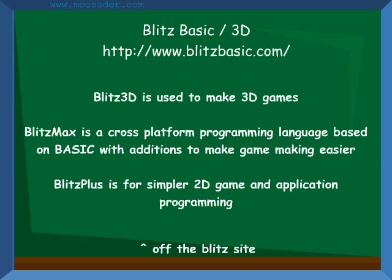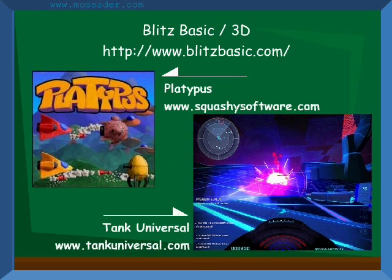Blitz Basic and Blitz 3D are languages made specifically to make games with. It's free to try and $80 to buy. Some games made with it are Platypus and Tank Universal.